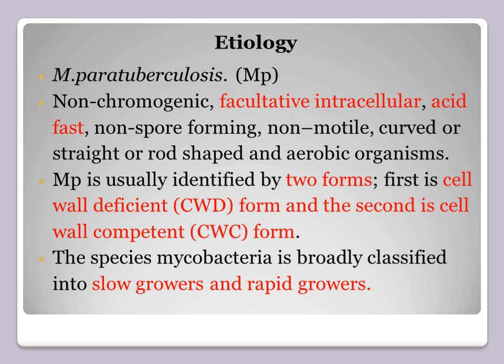Etiology: the causative organism is Mycobacterium paratuberculosis. The organisms are non-chromogenic, facultative intracellular — meaning they become intracellular when given the opportunity. They are acid-fast organisms, just like the tuberculous organism, and they take the Ziehl-Neelsen stain. They are non-spore-forming, non-motile, curved or straight rod-shaped, and aerobic.